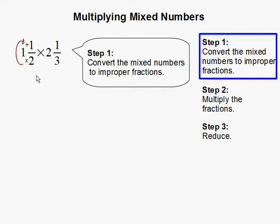So before we can multiply, we have to convert our mixed numbers to improper fractions. And in order to do so, you multiply the denominator, 2 times 1, the whole number, and add it to the numerator, and that number becomes your numerator. So 2 times 1 is 2, plus 1 is 3. Then our denominator stays the same.